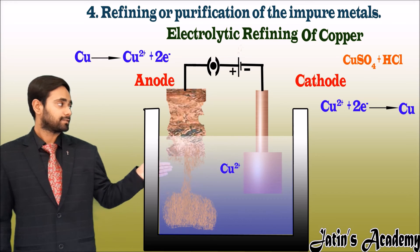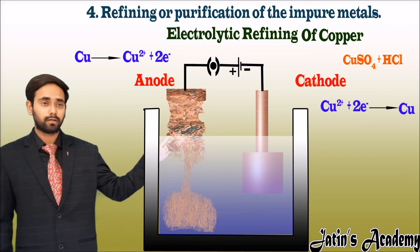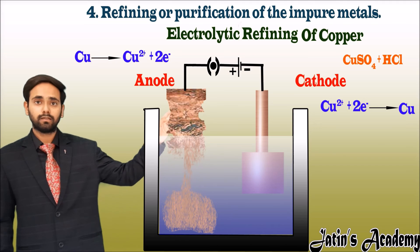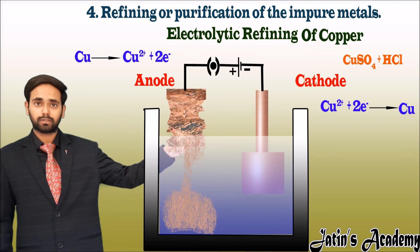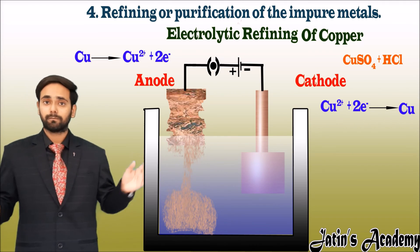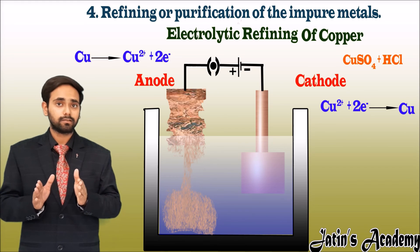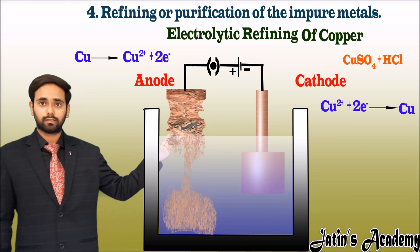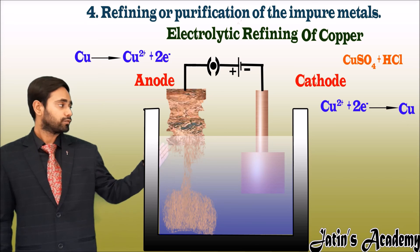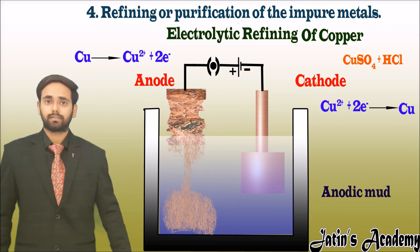This process is continuous — the pure copper keeps depositing on the cathode side. The impurities are not charged particles, so they settle down on the anode side. We call these settled impurities anodic mud.